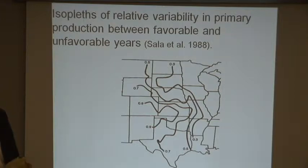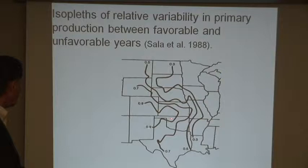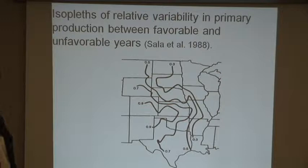Data for the Great Plains primary production - you can think of that as forage production or biomass yield. These are isopleth lines of relative variability between favorable and unfavorable years. This value is 0.9 here through the central southern Great Plains - northwestern Oklahoma Panhandle right - the highest in the Great Plains.